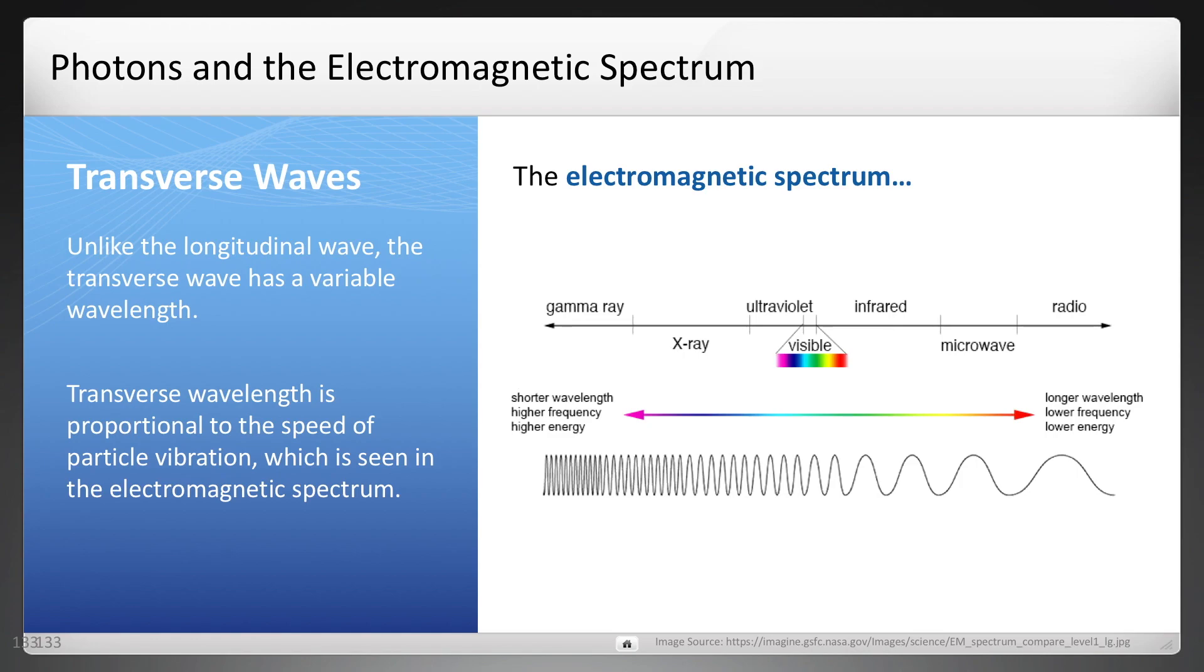First, a little bit about transverse waves and the electromagnetic spectrum. Everything we see from gamma rays to x-rays to light, microwaves, radio waves are really all the same wave. It's a change in wavelength as you can see in the diagram.